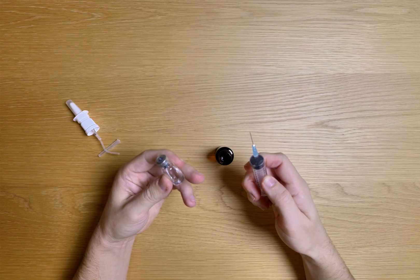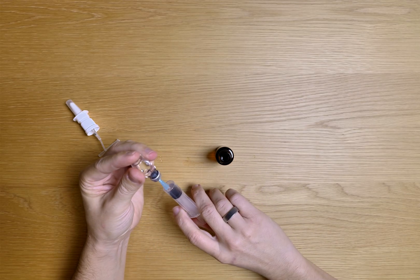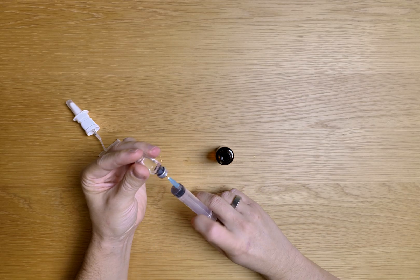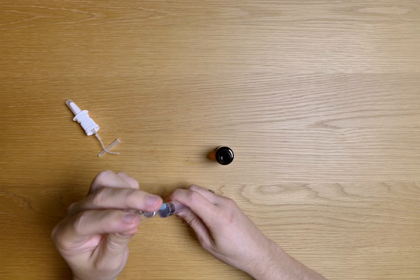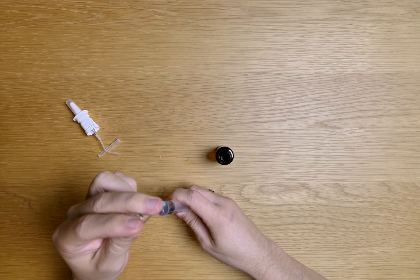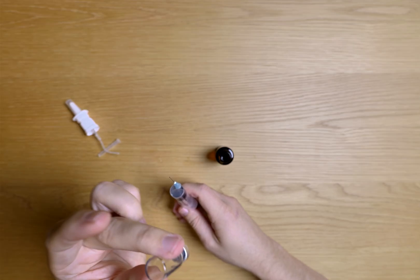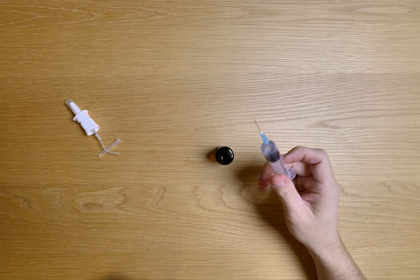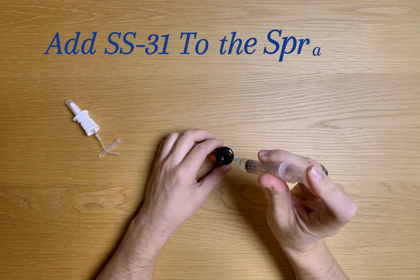Before I go into this vial, I'm just going to add some air just so it's easier to draw it out. So I'm going to insert the air. And then I'm going to draw it all the way out. Put it up straight and make sure that I get everything all the way out from the vial. You can see now the peptide vial is completely empty. This is my SS31 mixed. I'm going to go ahead and add this to the sprayer.